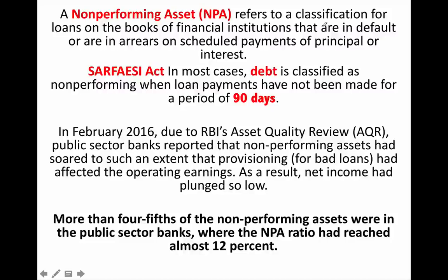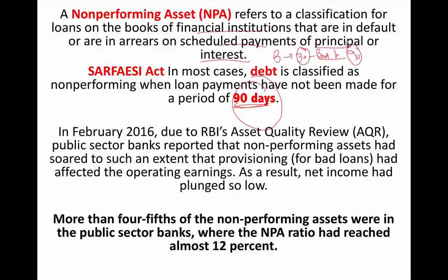Now, what is a non-performing asset? If a bank has given a loan to someone and on 30 days nothing has come back — no interest, no repayment, no tranche — then it is a bad loan. If it extends to 90 days, then it is classified as a non-performing asset. A non-performing asset refers to a classification of loans in the books of a financial institution that are in default or in arrears on scheduled payments of principal or interest. In most cases, a loan is classified as non-performing when payments have not been made for 90 days.